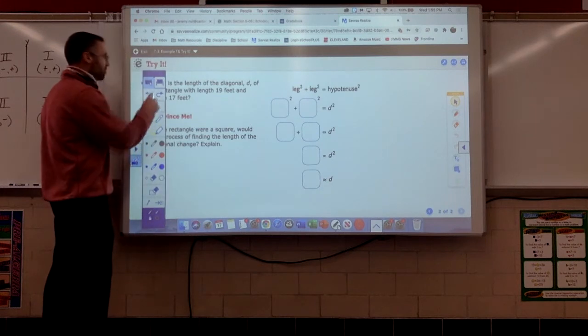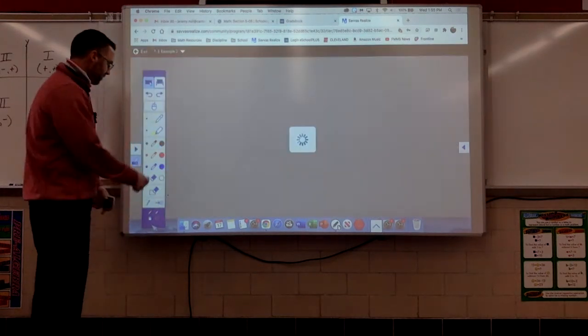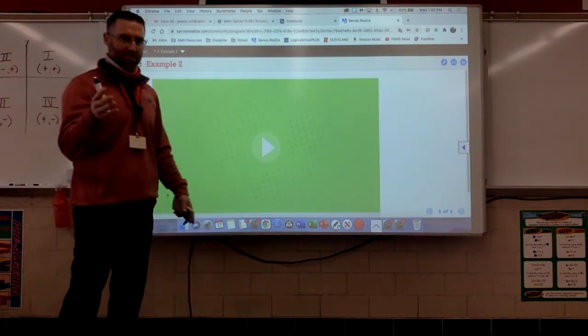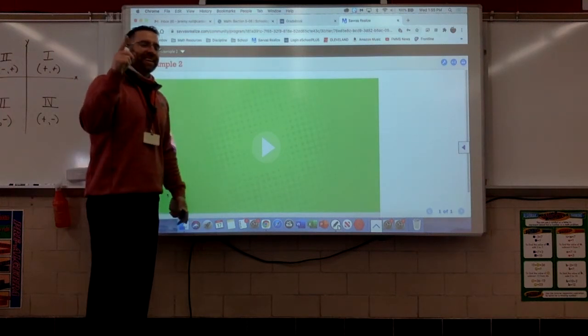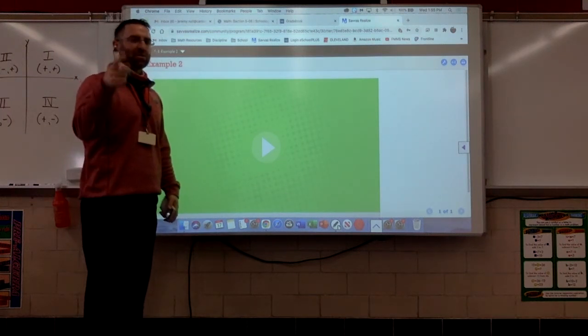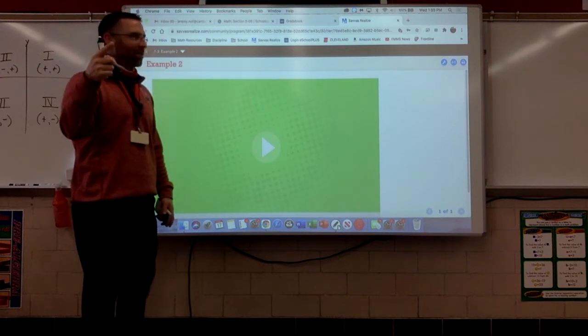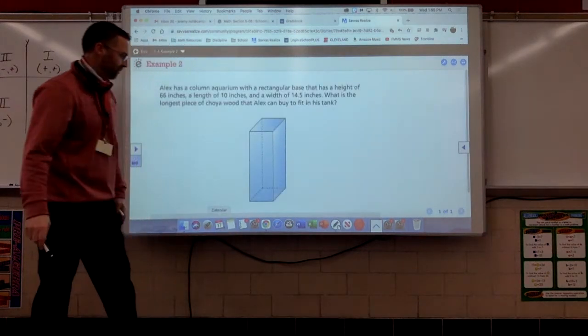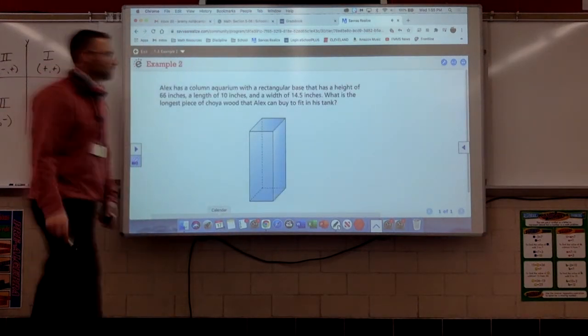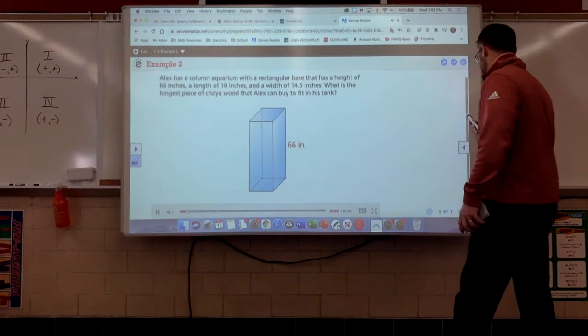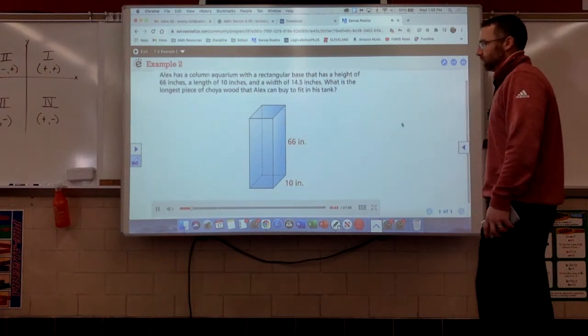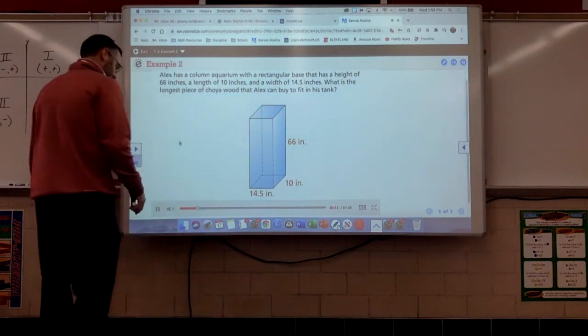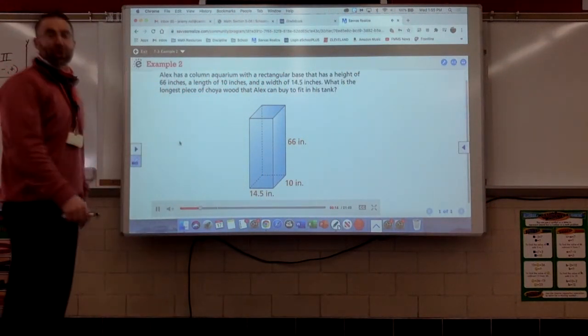Let's look at example two. Now, we're looking at finding the diagonal of a prism. It's a little different. The good news is, it's nothing new. The bad news is, you don't just find the Pythagorean theorem once. You have to find it twice. So, let's take a look at what they're saying. Alex has a column aquarium with a rectangular base. It has a height of 66 inches, a length of 10 inches, and a width of 14 and 5 tenths inches. What is the longest piece of cholla wood that Alex can buy to fit in his tank?